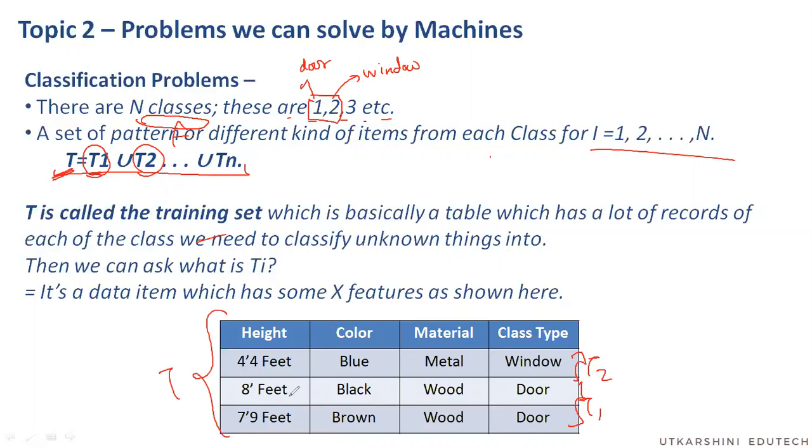Now, the T here, this particular table is called as my training set. A training set is something from which I will learn. For example, if you have learned, let's say, detecting what a pencil is, I first need to show you pictures or actual pencil, five or 10 different kind of pencils or the same pencil five different times. So you will be able to learn what a pencil is, how it looks like, how long it is, what color it has, what particular nib it is, how frequently it breaks, all those things.